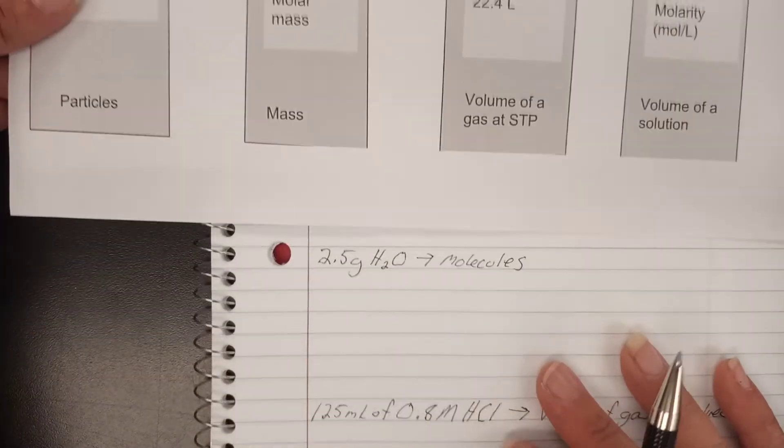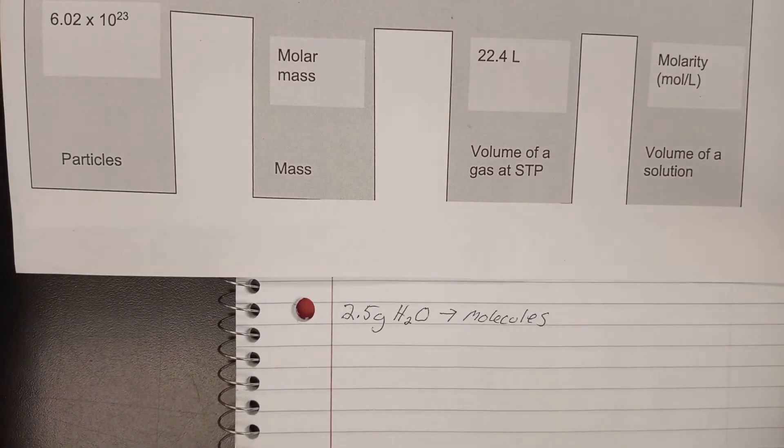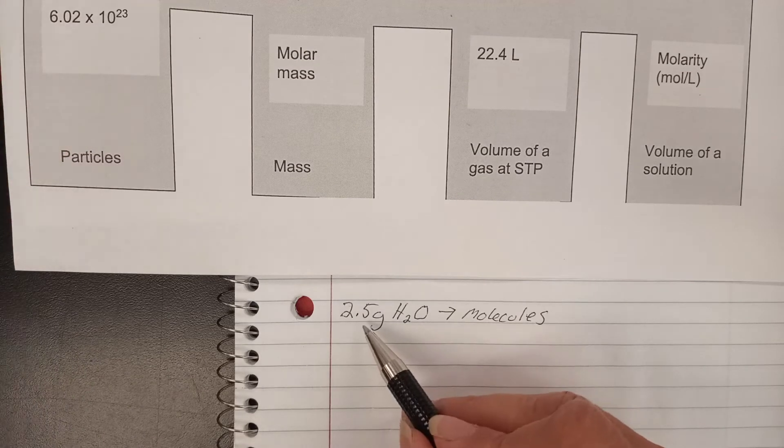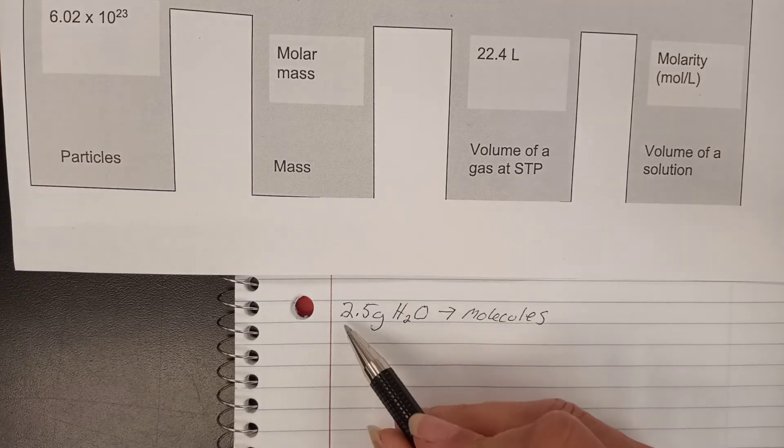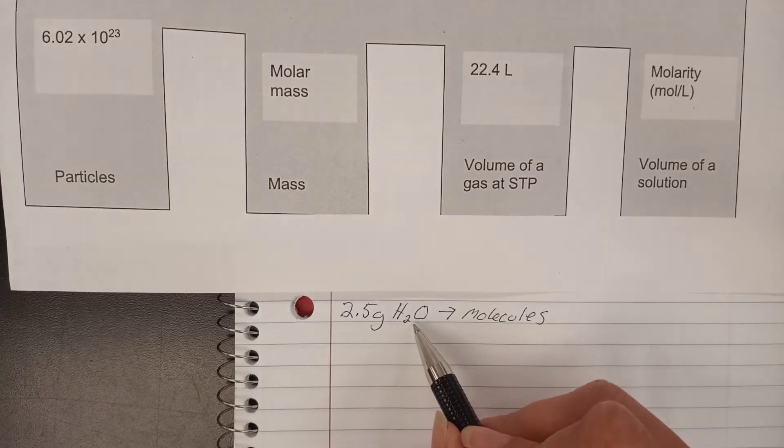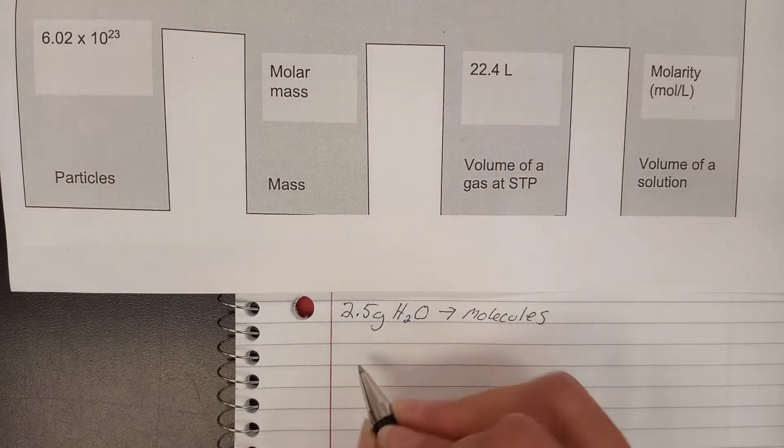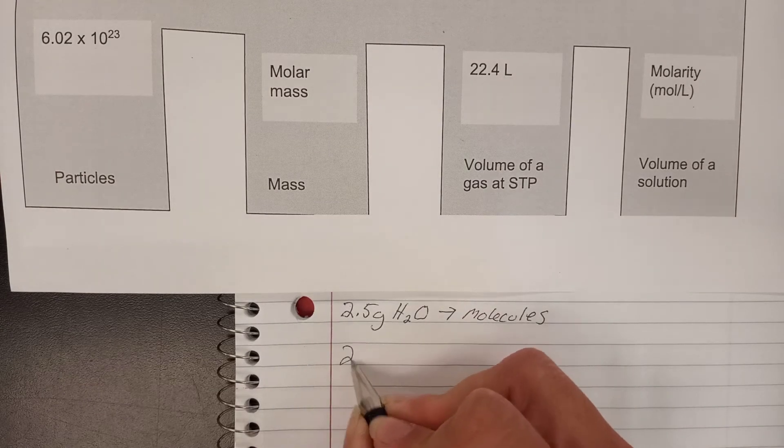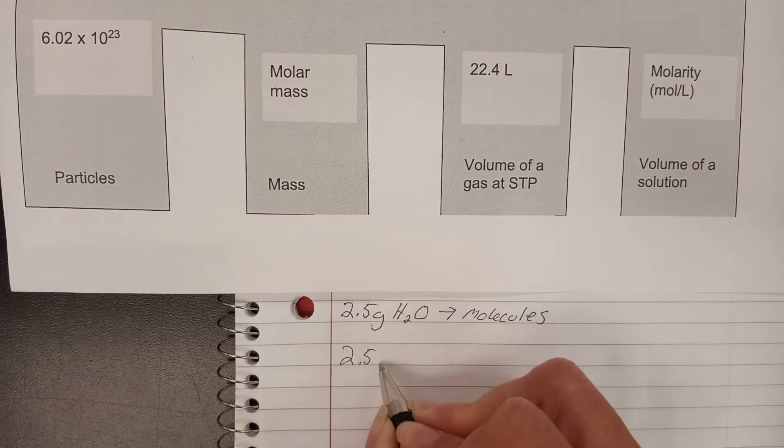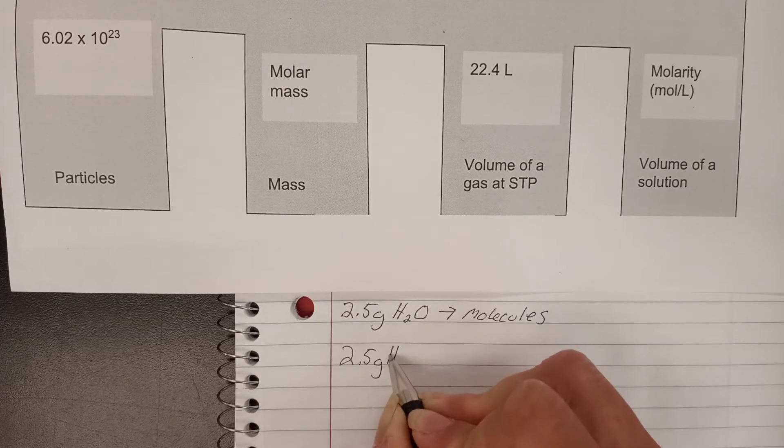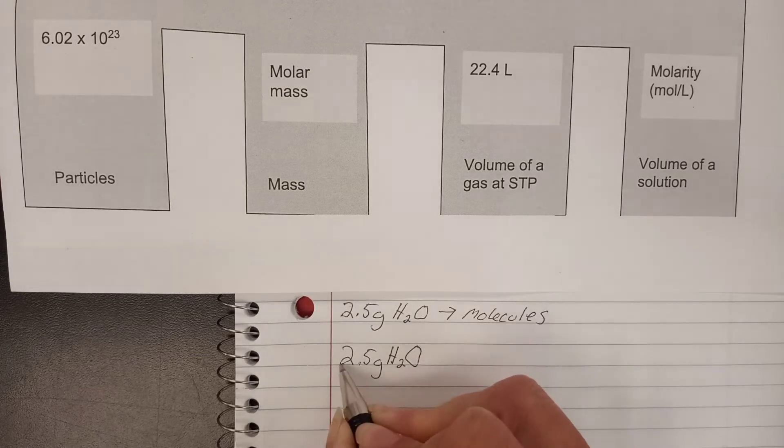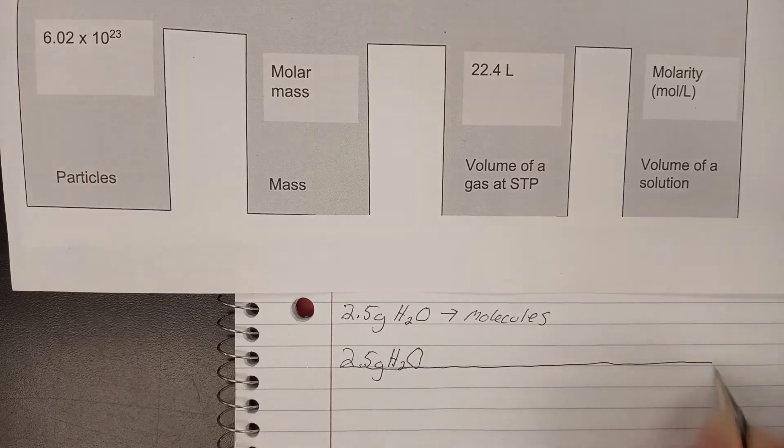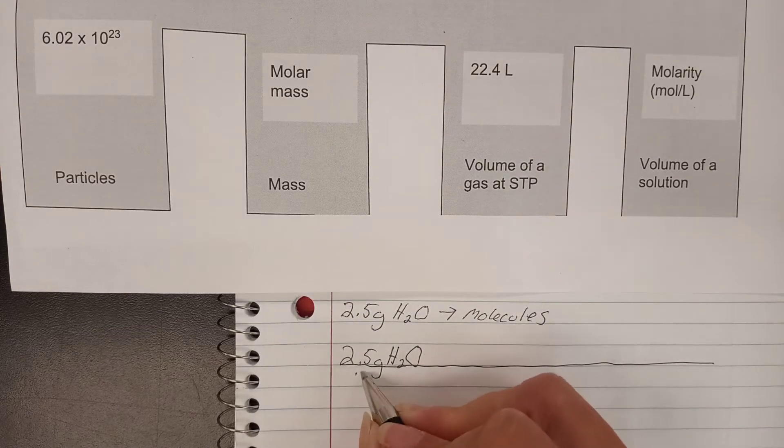If I wanted to know how many molecules there are in 2.5 grams of water, we've solved these problems before. We put the number we've got at the top, so 2.5 grams of water, and we're going to draw a line underneath it and make it long just in case, and we draw a happy face down here to make ourselves feel better about the process.